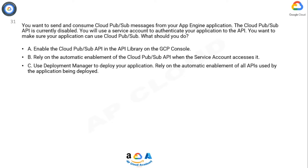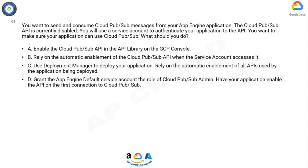Option C: Use Deployment Manager to deploy your application. Rely on the automatic enablement of all APIs used by the application being deployed. Option D: Grant the App Engine default service account the role of Cloud Pub/Sub admin. Have your application enable the API on the first connection to Cloud Pub/Sub.